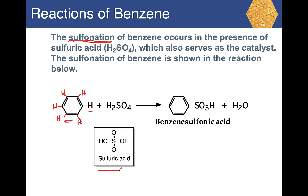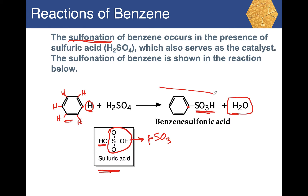The Lewis dot structure of sulfuric acid helps identify the group that will substitute for the hydrogen. That group is SO3H. The SO3H bonds to the benzene ring, and the H and OH combine to form water as the inorganic product. The organic product is benzene sulfonic acid.